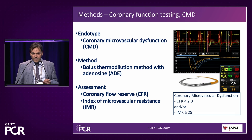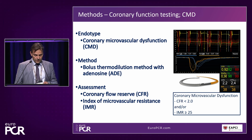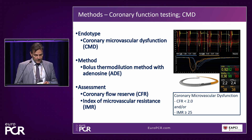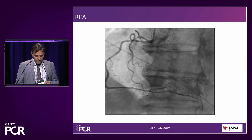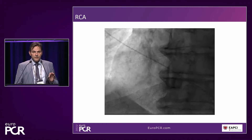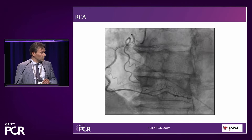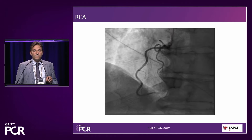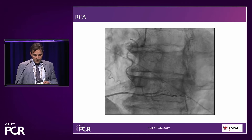After the acetylcholine provocation testing, we always do the testing for coronary microvascular dysfunction. We use the Abbott wire, bolus thermodilution, continuous IV infusion of adenosine, and we assess CFR and IMR. Patients referred for coronary function testing are asked to stop all vasoactive medication, and we don't give any nitroglycerin.